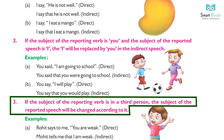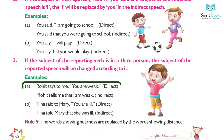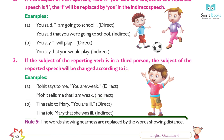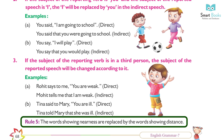(3) If the subject of the reporting verb is in the third person, the subject of the reported speech will be changed accordingly. Examples: (a) Rohit says to me, 'You are weak.' (Direct) → Rohit tells me that I am weak. (Indirect) (b) Tina said to Mary, 'You are ill.' (Direct) → Tina told Mary that she was ill. (Indirect)